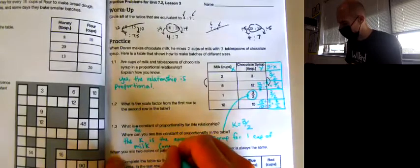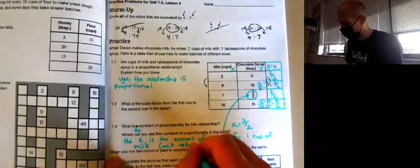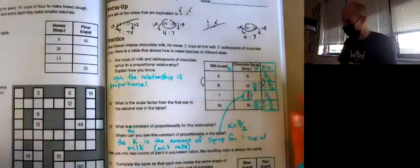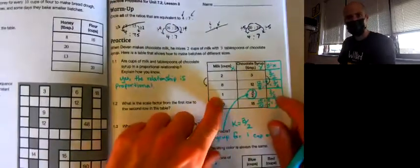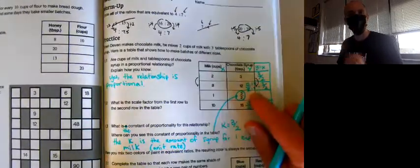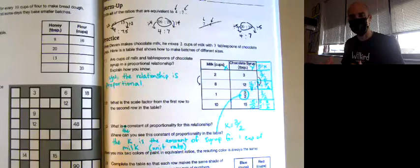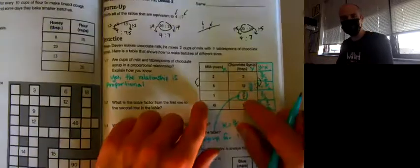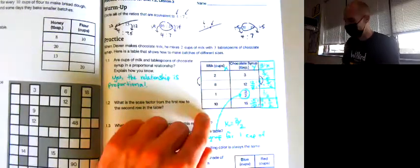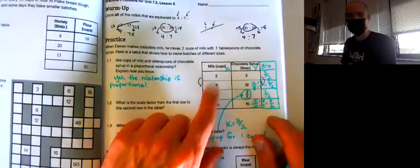The K is the amount of syrup for one cup of milk. We also call this a unit rate. Anytime you have a proportional relationship and you have one for your x value, then whatever the value is in your y column right there is going to be your constant of proportionality. It's also going to be your unit rate. It's telling you how much of the y quantity you need for one of the x quantity.